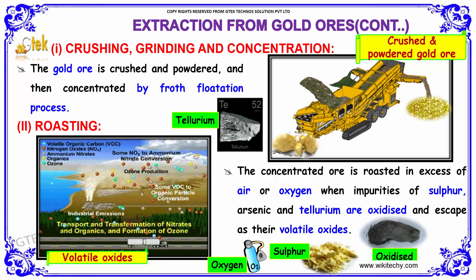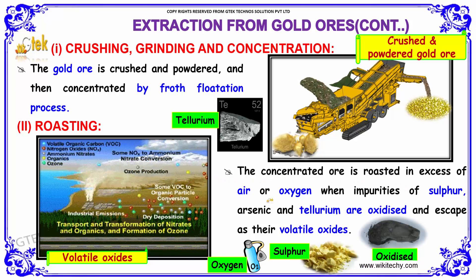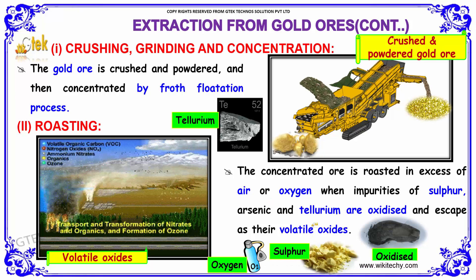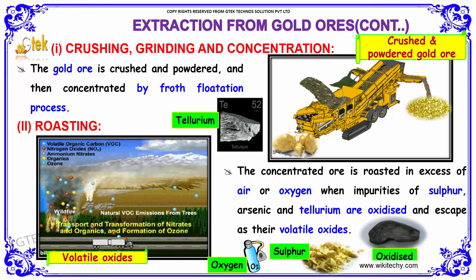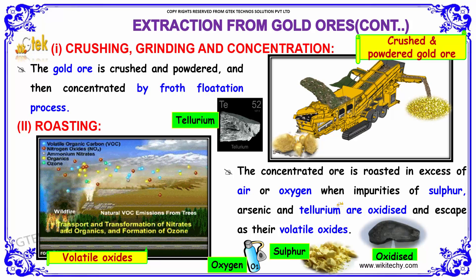The second step is roasting. The concentrated ore is roasted in excess of air and oxygen, where impurities like sulfur, arsenic, and tellurium are oxidized and escape as their volatile oxides.